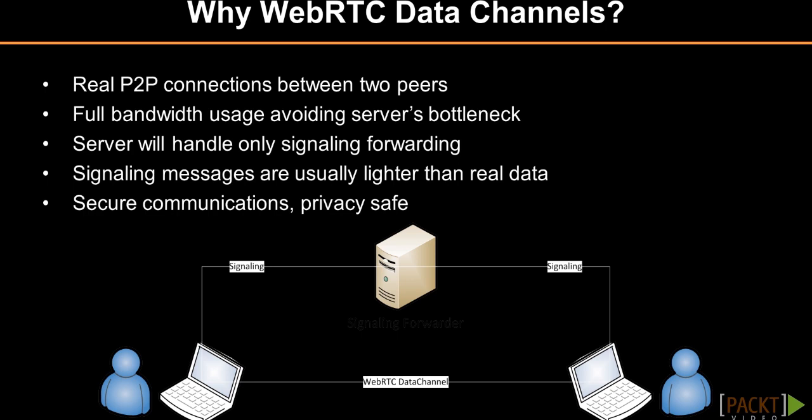So, WebRTC data channels are the only way to gain real peer-to-peer connection between two peers, obtaining full bandwidth usage. The server, in this case, as you can also see from the slides diagram, will handle only signal forwarding between the two peers. And these signaling messages are usually lighter than the real data that will be transmitted through WebRTC data channels. Finally, we can achieve a safe and private communication thanks to SSL and the peer-to-peer features of WebRTC communications.